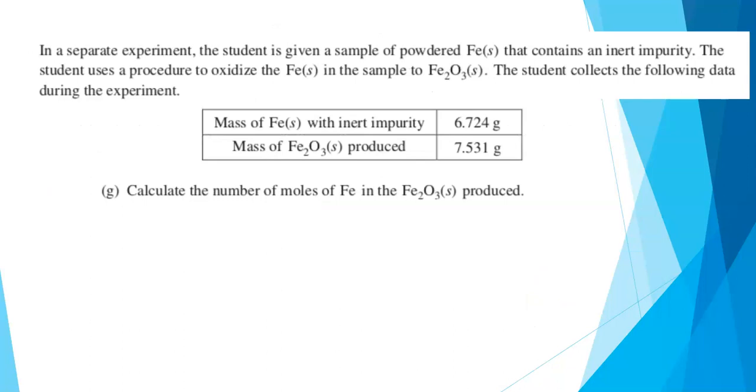Let's go on and look at part G. In a separate experiment, the student is given a sample of powdered iron and this iron contains an impurity. So it's iron and something else. But the impurity is inert, it's not reacting. And then we're going to carry out a procedure, not specified, to oxidize the iron to make iron three oxide, Fe2O3. And so here's the data from the experiment. The original mass of the powdered iron with the impurity, we're given that mass and then we did whatever procedure it was and made iron three oxide. And the question is for part G, calculate the number of moles of iron in the iron three oxide. Well, this was scored out at one point and this is actually really easy. Every AP chemistry student should be able to do this with ease.